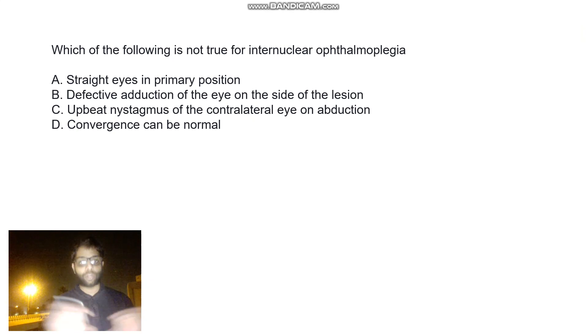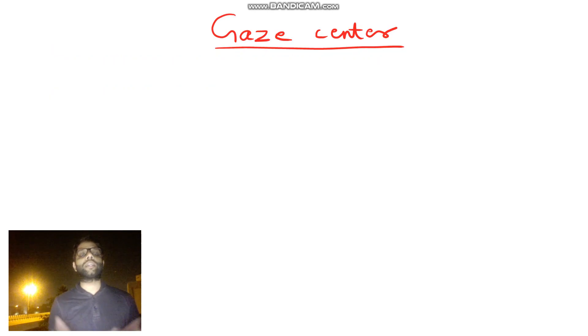Let us see some points regarding horizontal gazes and then I'll tell you the answer. Most of you are giving the answer correct, that is ataxic nystagmus because it is a horizontal gaze problem. So there is a horizontal nystagmus, ataxic nystagmus in internuclear ophthalmoplegia. But let me tell you some points regarding gaze centers and the horizontal gazes today.